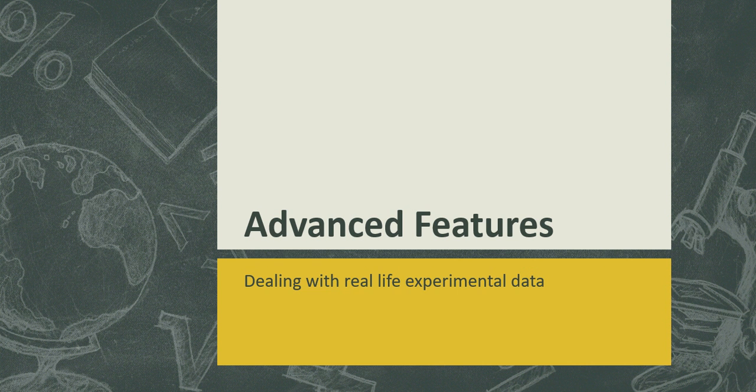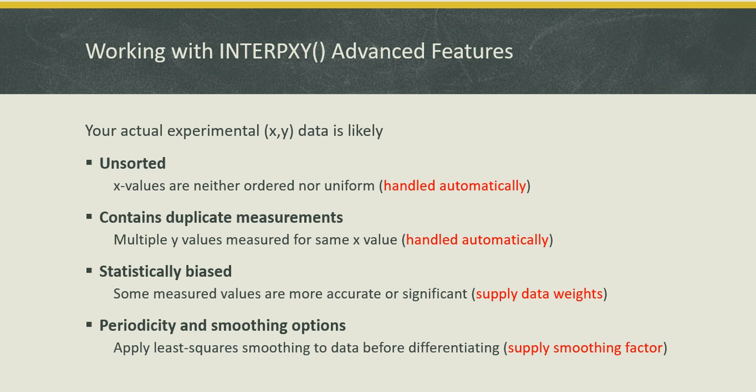Next I will talk about some of the advanced optional features which are helpful in dealing with real-life experimental data. Usually real-life data is unsorted. It may contain duplicates when you have multiple measured values at the same x value. It could be statistically biased where some measurements are more accurate or significant than others. And it might be noisy or it might have come from a wave-like periodic sample. And there's ways to improve the accuracy of the interpolation. INTERPXY handles the unsorted data and the duplicate measurements automatically by averaging the measurements at a given x value and sorting the data automatically for you. Let's see what we can do about the other issues.